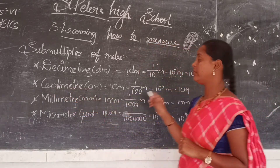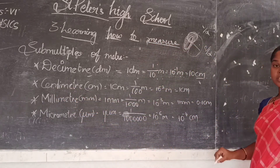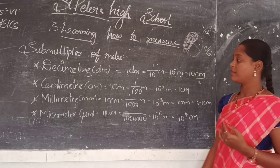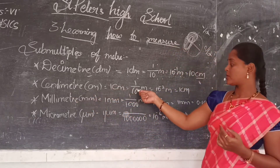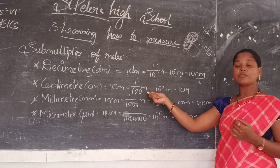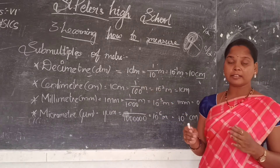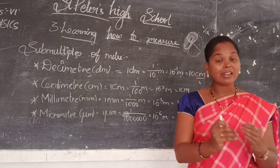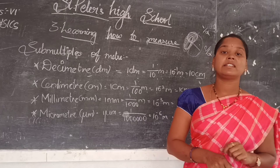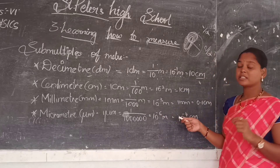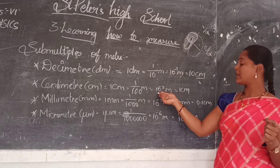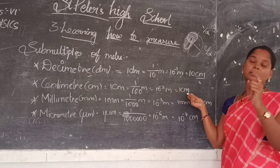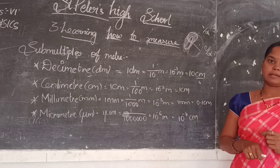Next is centimeter. One centimeter is 1/100th part of the meter — that means 1 meter is divided into 100 equal parts and that one part is called a centimeter. It can be written as 10⁻² meters, which is equal to 1 centimeter. Centimeter is a smaller division than decimeter.